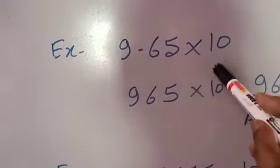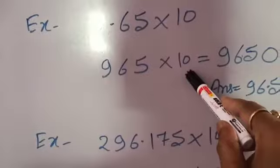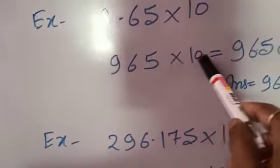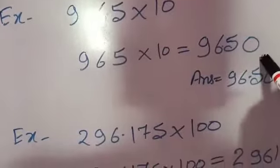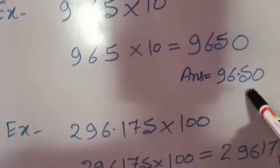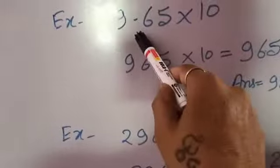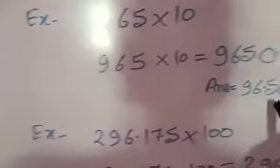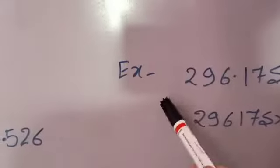The first example is 9.65 multiplied by 10. To multiply a decimal by 10, 100, 1000, and so on, we first write the number without the decimal. When multiplying by 10, we add one zero. So 965 with one zero added gives 9650. When we write the final answer, we put the decimal after the same number of digits as given in the multiplicand — here it is after two digits — so we place the decimal after two digits.